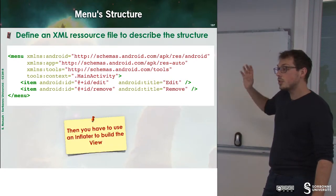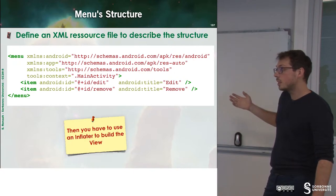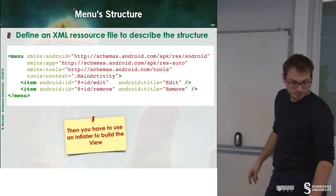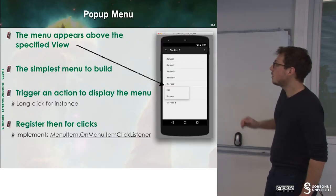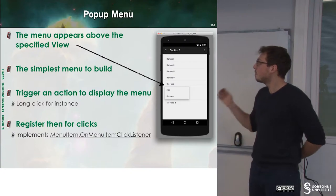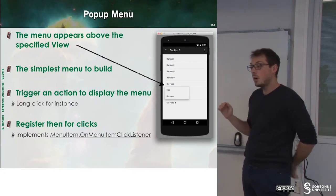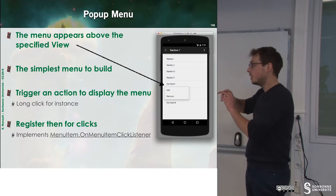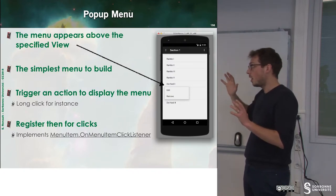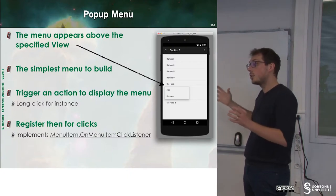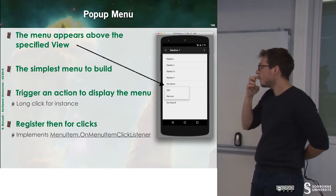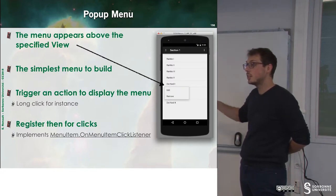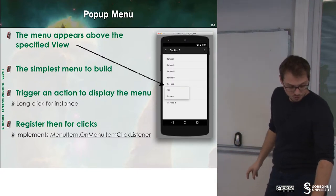To build this menu, you just have to call the layout inflater in order to expand the view. Let's first have a look at pop-up menu. The pop-up menu appears above the selected elements. When there is a click, you can trigger the inflater for building the menu. You have to register for click in order to be able to launch the menu.